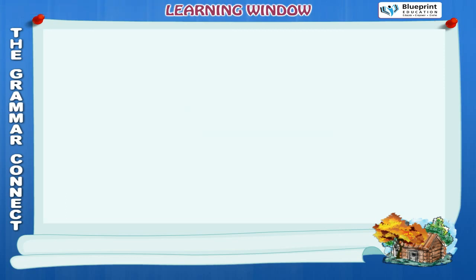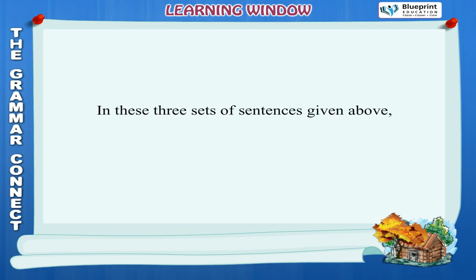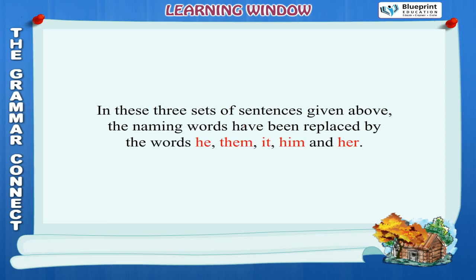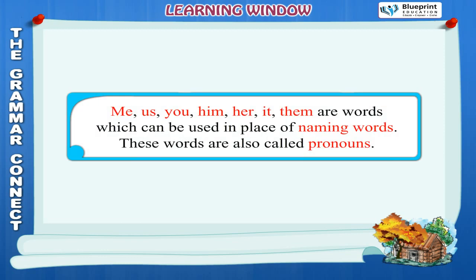In these three sets of sentences, the naming words have been replaced by the words he, them, it, him and her. Me, us, you, him, her, it, them are words which can be used in place of naming words. These words are also called Pronouns.